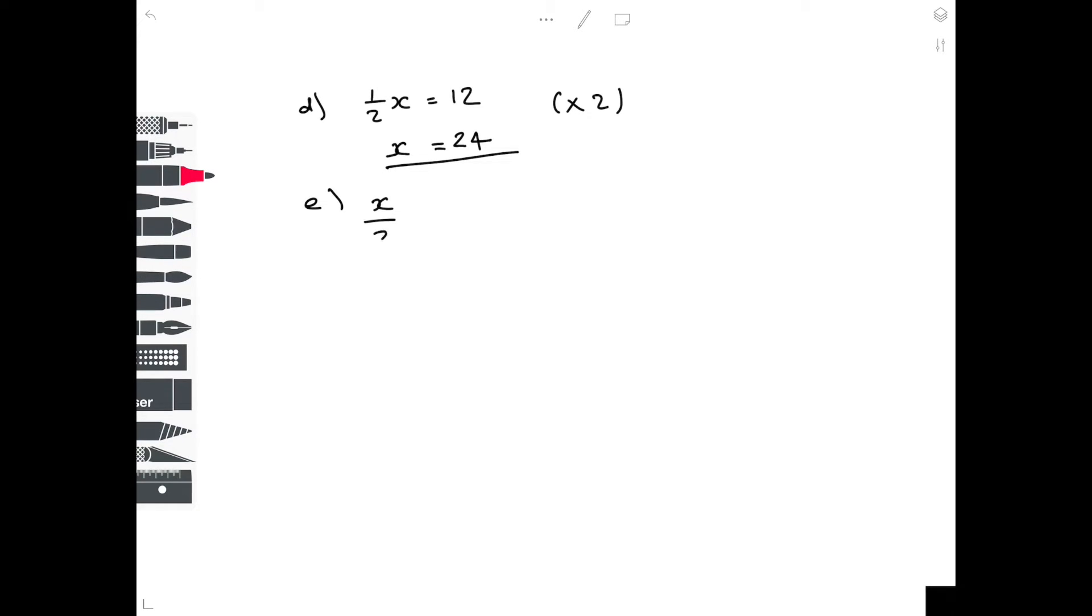With part E, we have x over 2 equals 4 over 9. Again, we're looking to get x by itself, so you want x to equal itself alone. So the way in which we do that is to make sure that it isn't a half. So we have to multiply by 2. We do it on both sides. So half of x times 2 is obviously just x. And then we get 4 over 9 times 2. And as with all fractions, you just multiply the top number by 2 to get 8 over 9.